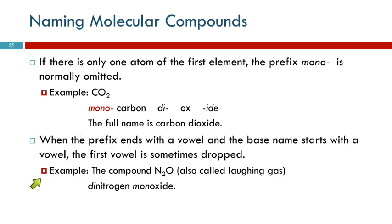And then this one's even trickier. When the prefix ends with a vowel and the base name starts with a vowel, we sometimes, but not always, drop the first vowel. So N2O, there's two nitrogens, so that would be dinitrogen, and there's one oxygen, so monoxide.